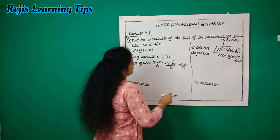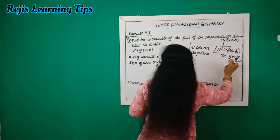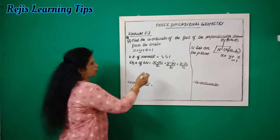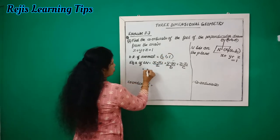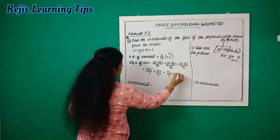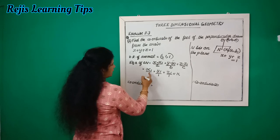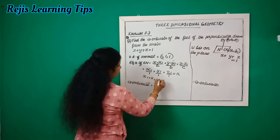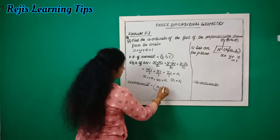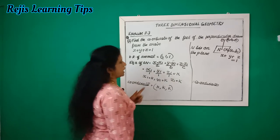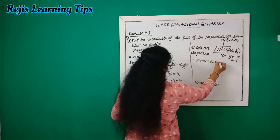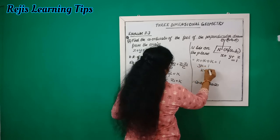For the next part, x1 equals 1. Setting x1 by 1 equals y1 by 1 equals z1 by 1 equals k, we get x1 equals k, y1 equals k, z1 equals k. The coordinates of the foot of the perpendicular are (k, k, k). Since N lies on the plane, we get 3k equals 1, therefore k equals 1 by 3.